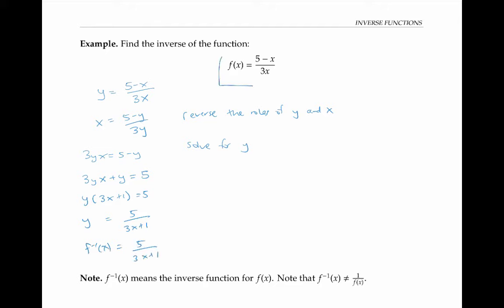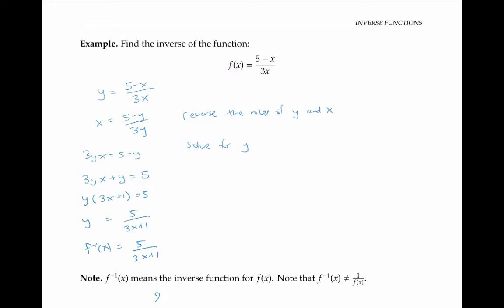Notice that our original function f and our inverse function f inverse are both rational functions, but they're not the reciprocals of each other. In general, f inverse of x is not usually equal to one over f of x. This can be confusing because when we write two to the minus one, that does mean one over two, but f to the minus one of x means the inverse function, not the reciprocal.